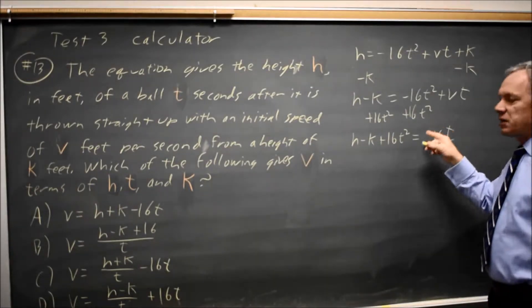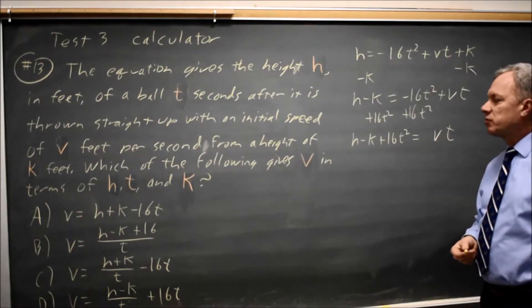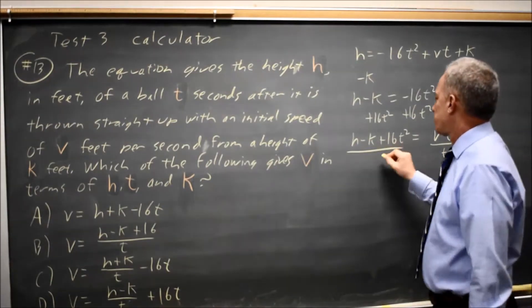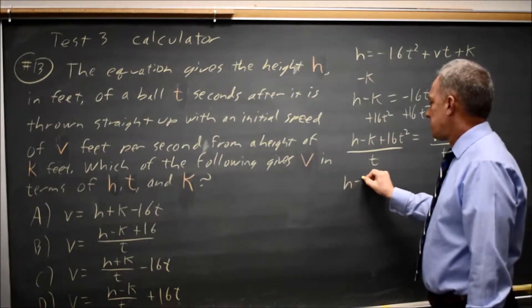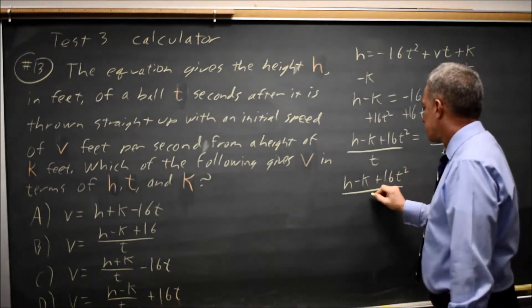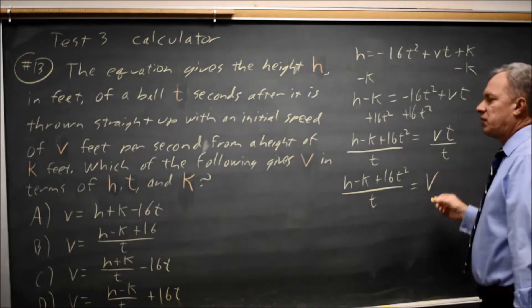Now that I don't have anything added to the v term, I can divide through by t, which will give us v by itself. So h minus k plus 16t squared over t equals v.